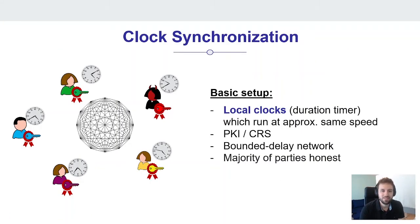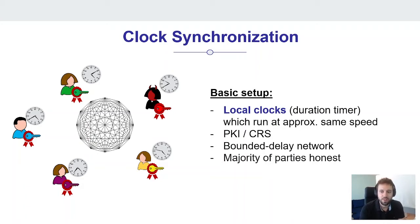Let me kick this off by explaining what the problem of clock synchronization actually is. As the basic setup, we assume we have a set of parties equipped with so-called local clocks or duration timers. Every party has access to a device by which you can measure the passage of time or time intervals, and we assume those duration timers run approximately at the same speed. We further assume a public key infrastructure as a setup, or alternatively a common reference string, so we can associate each party to a public key and verify signed messages.